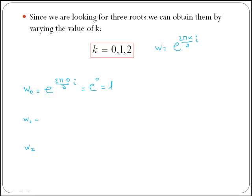For k equals 1, we get w1 equals e to the power of 2 pi i over 3. For k equals 2, we get w2 equals e to the power of 4 pi i over 3.